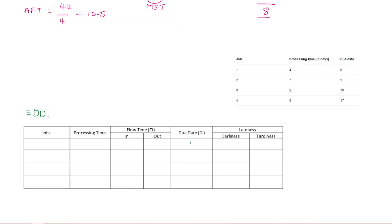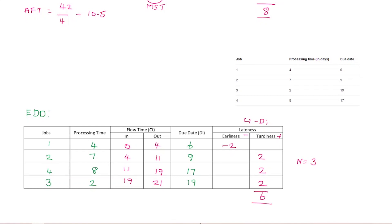Next is Earliest Due Date (EDD). Due dates sorted: 6, 9, 17, 19 — so job order is 1, 2, 4, 3. Processing times: 4, 7, 8, 2. Start times: 0, then 4, then 4 plus 7 is 11, then 11 plus 8 is 19, then 19 plus 2 is 21. Formula: lateness = Ci minus Di (completion date minus due date). Job 1: 4 minus 6, early. Job 3: 2 days late. Total tardiness is 6. Max span time is 21. Number of late jobs is 3. Average flow time calculation: 4 plus 11 plus 19 plus 21.